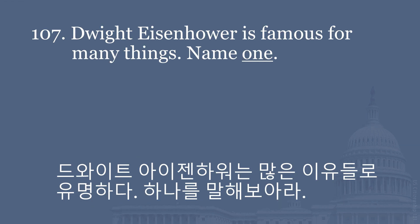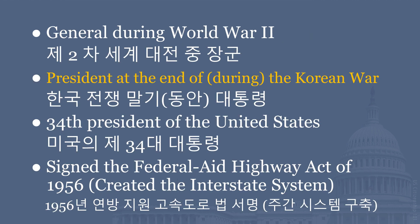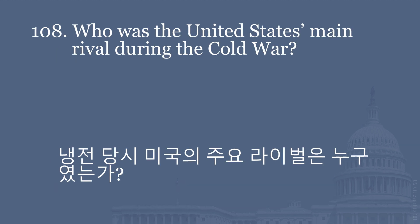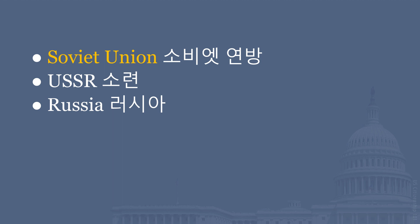Dwight Eisenhower is famous for many things. Name one. General during World War II. President during the Korean War. 34th President of the United States. Signed the Federal Aid Highway Act of 1956 — created the Interstate System. Who was the United States' main rival during the Cold War? Soviet Union. USSR. Russia.